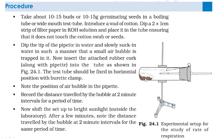The germinating seeds will start to respire. In the boiling tube, the oxygen will be consumed, carbon dioxide will be released, and the potassium hydroxide on the filter paper will absorb the carbon dioxide. A vacuum is created, and the bubble or water in the pipette will start moving towards the inside. When we observe this, we can calculate the rate of respiration. How fast the bubble or water moves inside tells us how fast the seeds are respiring.